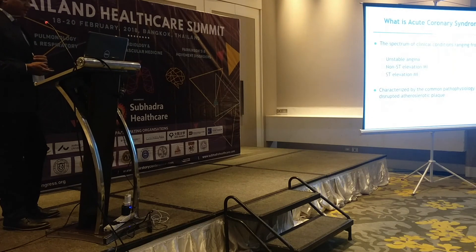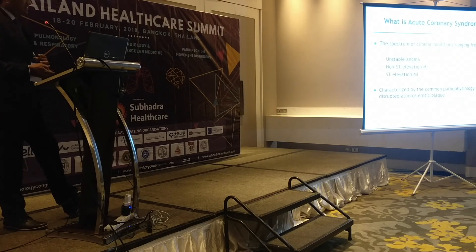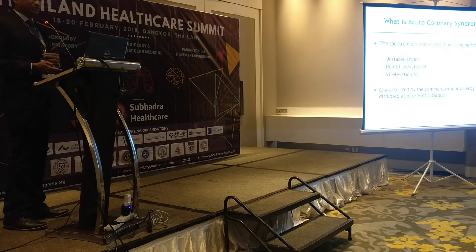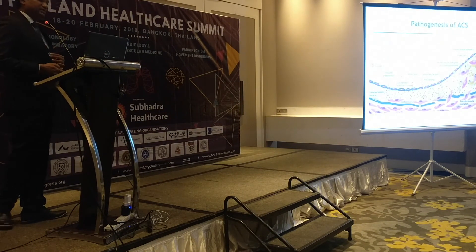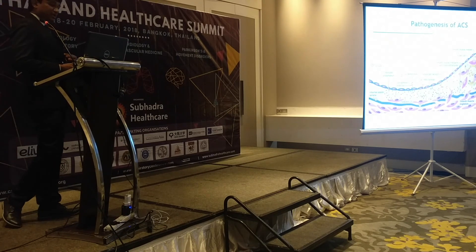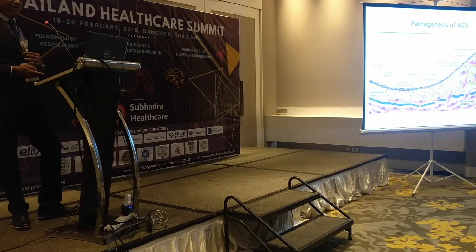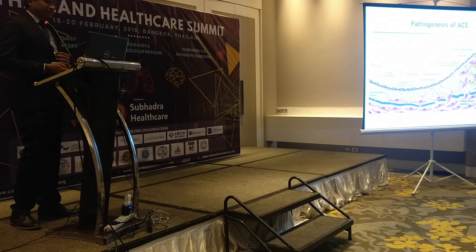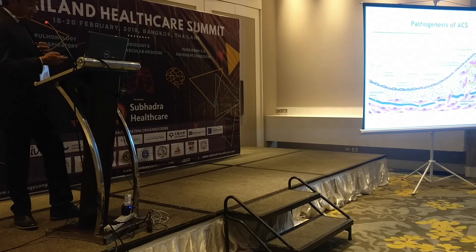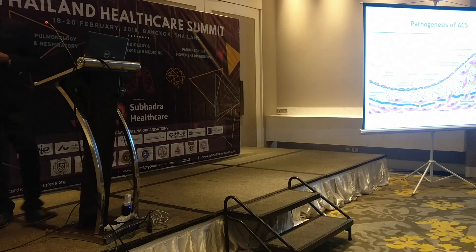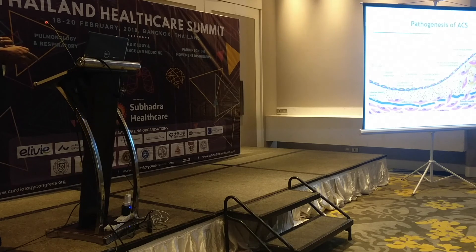When we talk about acute coronary syndrome there are three spectrums: unstable angina, NSTEMI, and STEMI. These are characterized by a common pathogenesis — a disrupted atherosclerotic plaque. LDL, that is low-density lipoprotein, gets internalized into the elastic lamina; there is oxidization of the LDL particles, which invites macrophages. They become foam cells. With liberation of various cytokines there is further proliferation of inflammatory tissue and smooth muscle cell activity, leading to formation of an atherosclerotic plaque, which can be soft — called an unstable plaque — or calcified, called a stable plaque.